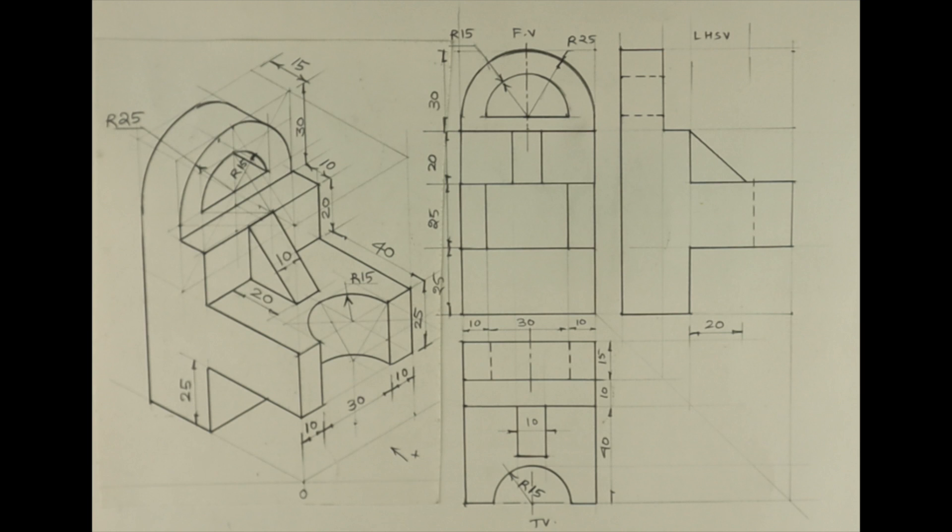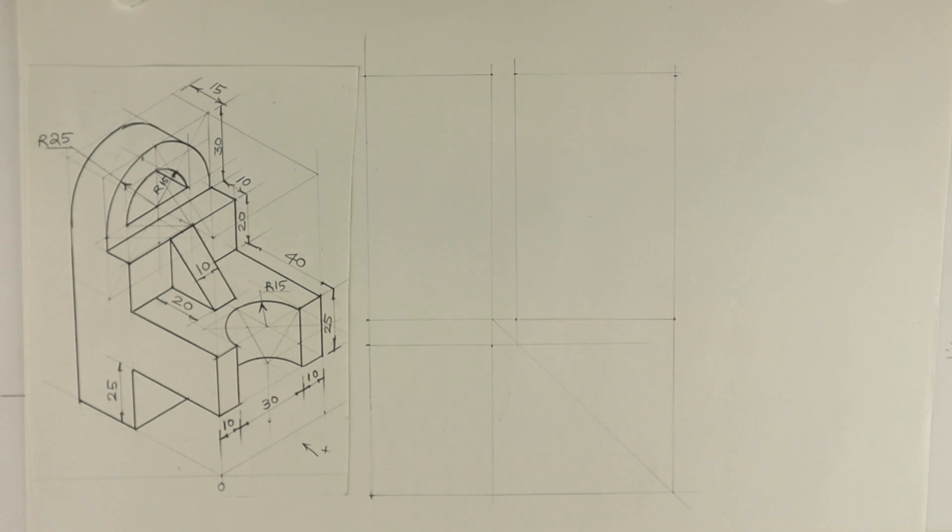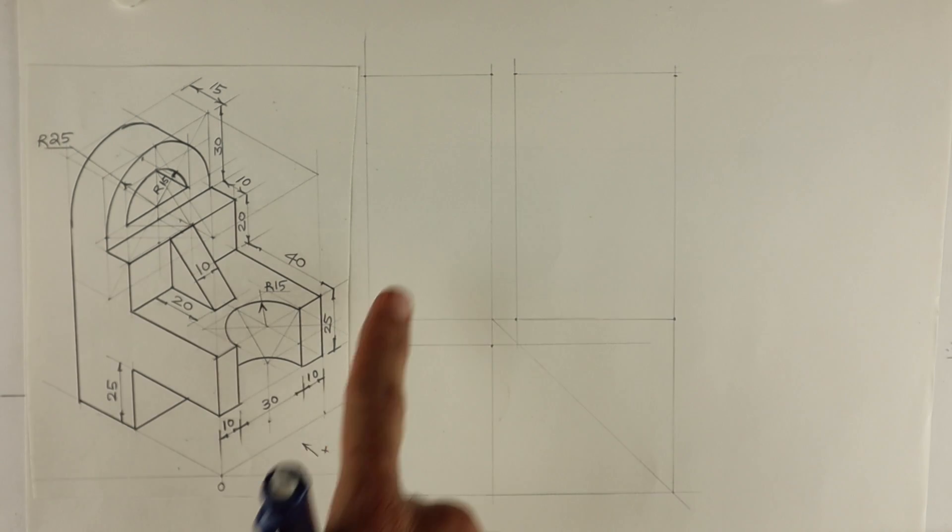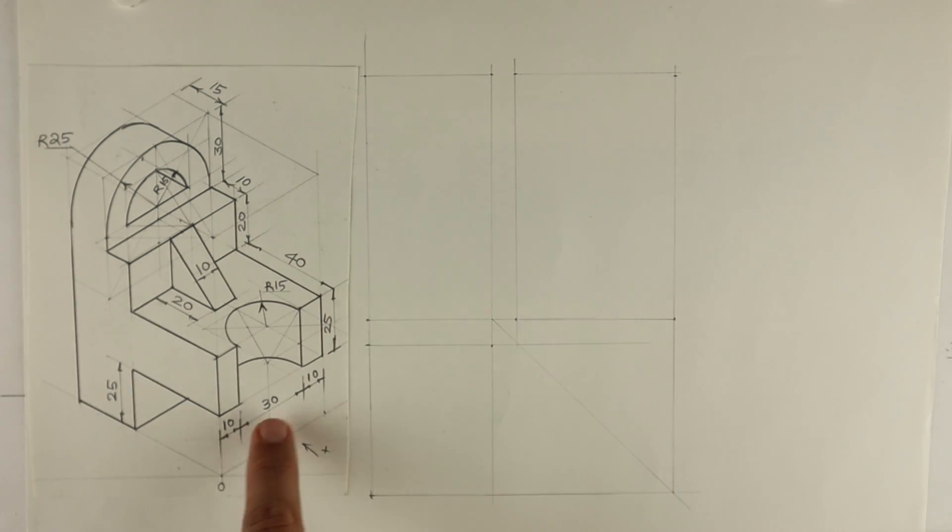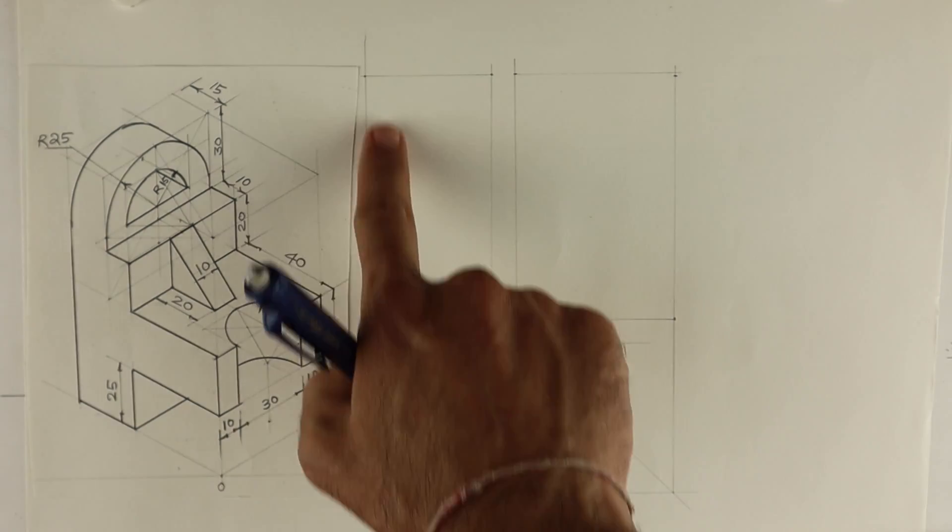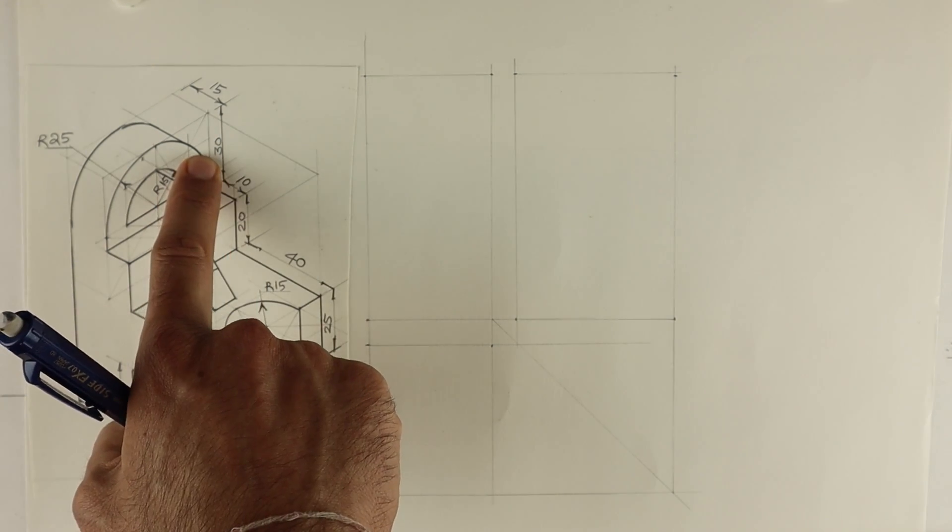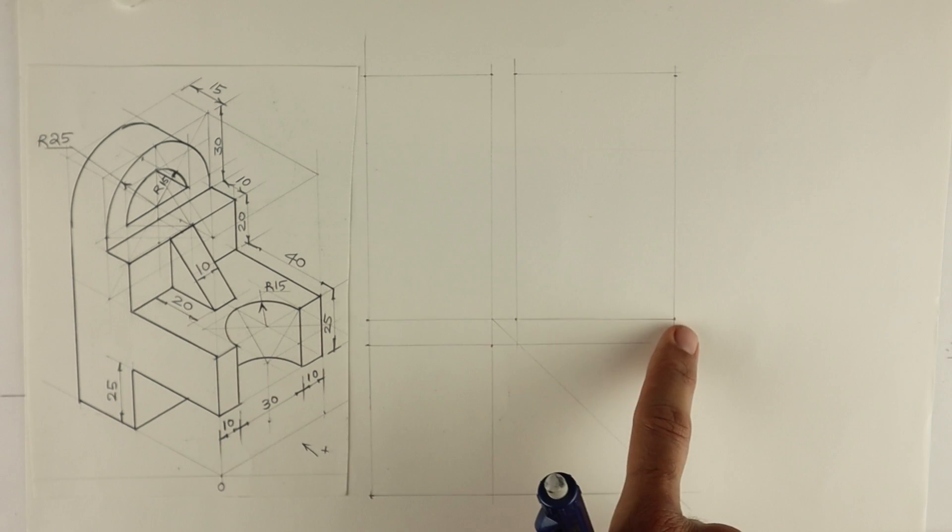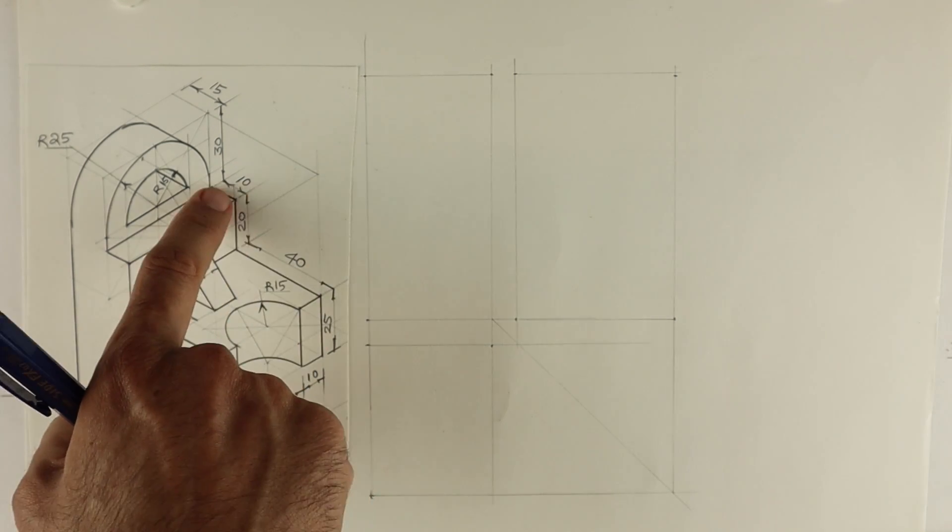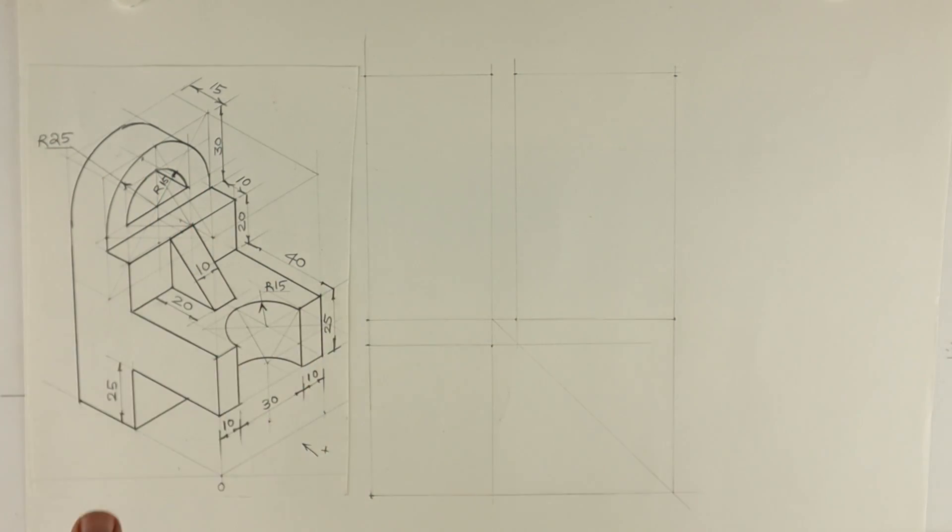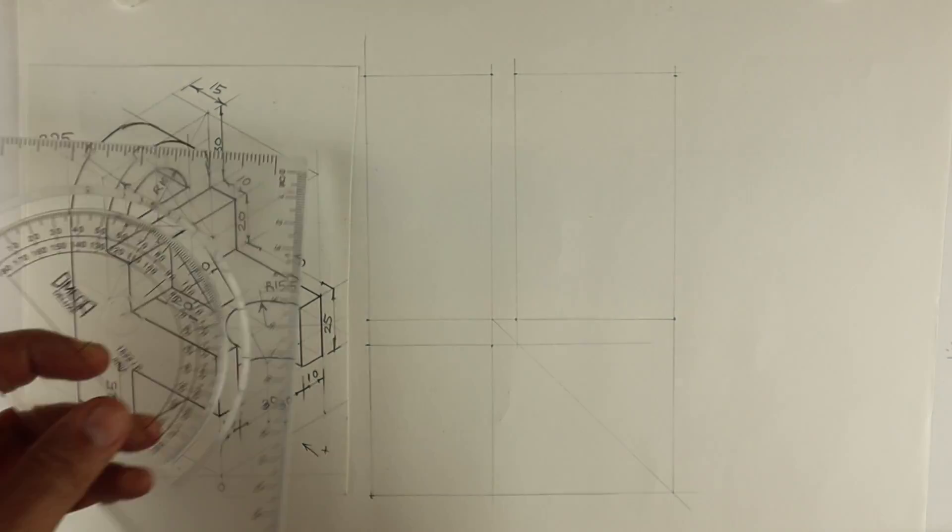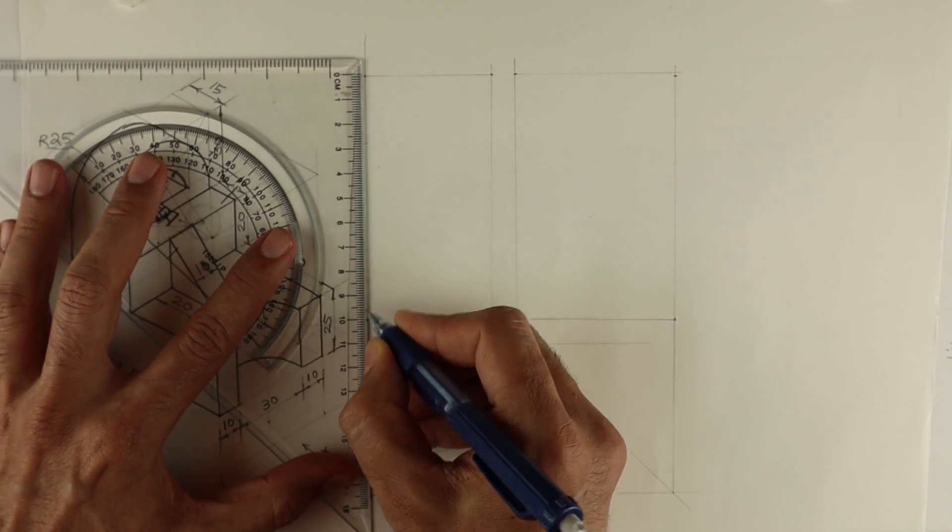Welcome to technical drawing. Today we are going to solve orthographic of the sum. See this, this is length, height, and width. Length is 50: 10, 30, 10. Height is 25 plus 25 plus 20 plus 30, which is 100. And width is 65: 40 plus 10 plus 15. So we'll start with front view.